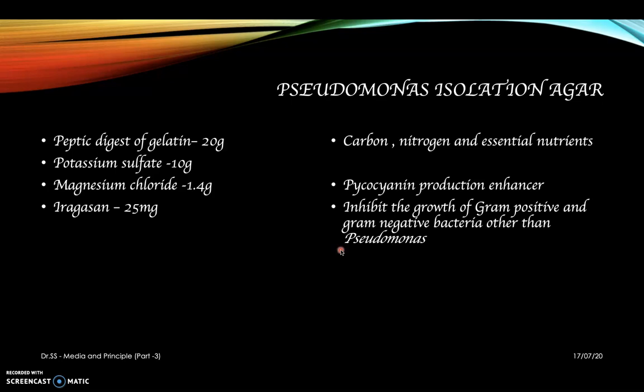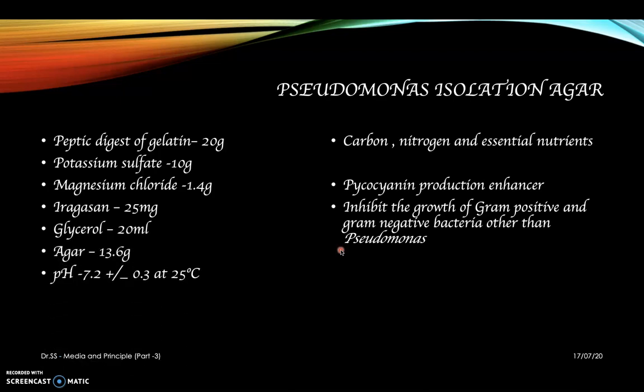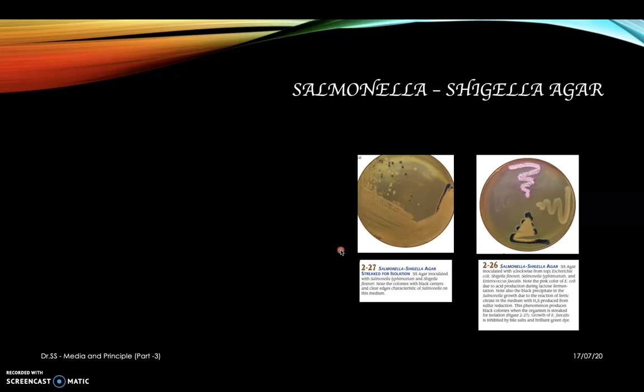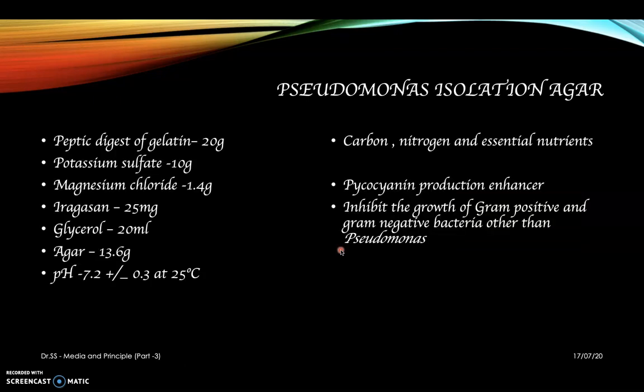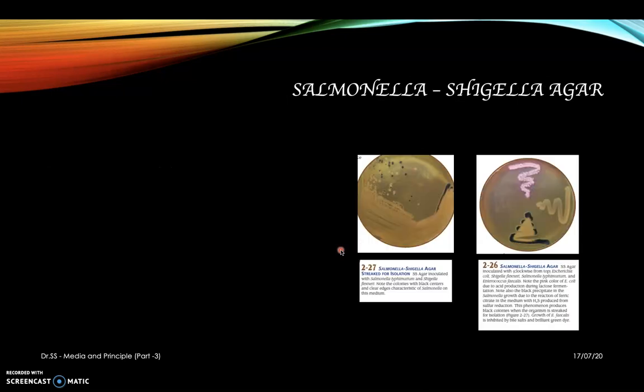Irgasan is the main component involved in the inhibition of gram-positive and gram-negative organisms other than Pseudomonas. Glycerol and agar are also included, and the pH is 7.2 plus or minus 0.3 at 25 degrees Celsius.